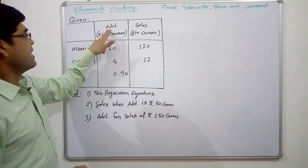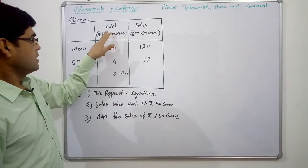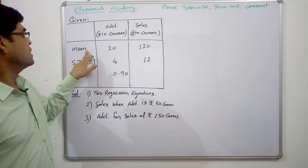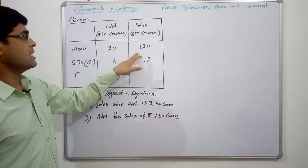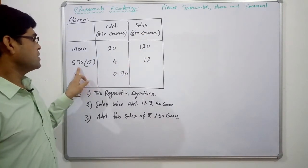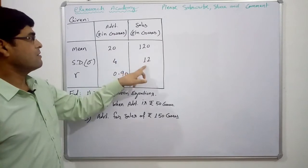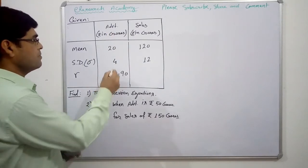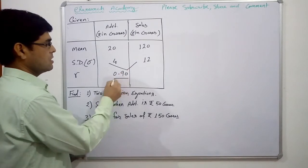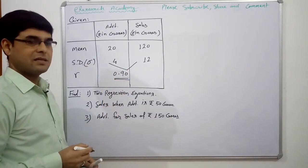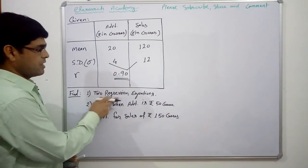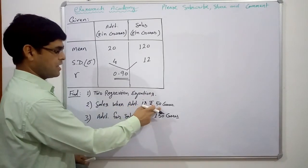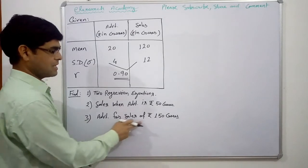In this question we are given two variables: advertisement and sales, with values in crore rupees. The mean of advertisement is 20 crores and for sales it is 120 crores. The standard deviation is 4 for advertisement and 12 for sales. The correlation between advertisement and sales is 0.9. We are asked to calculate two regression equations, sales when advertisement is Rs.50 crores, and advertisement for sales of Rs.150 crores.